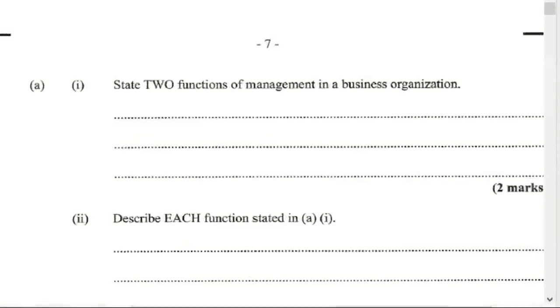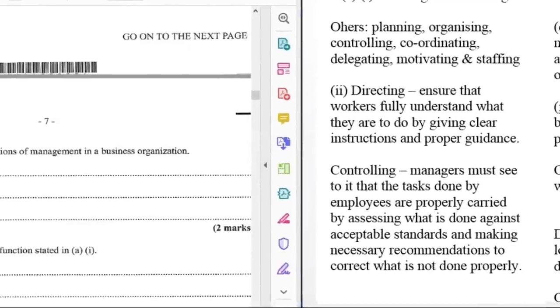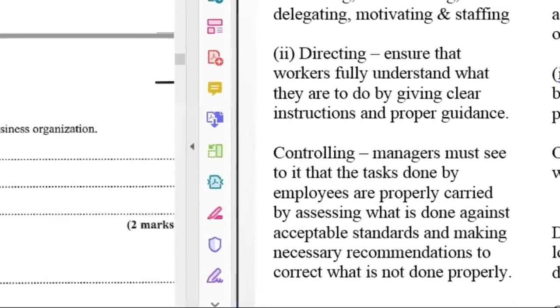Question 2A2, describe each function stated in A1 above. For directing, management ensures that workers fully understand what they are to do by giving clear instructions and proper guidance. For controlling, managers must see to it that the tasks done by employees are properly carried out by assessing what is done against acceptable standards and making necessary recommendations to correct what is not properly done.